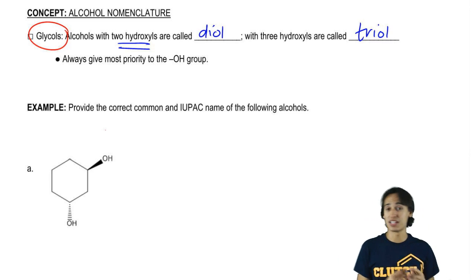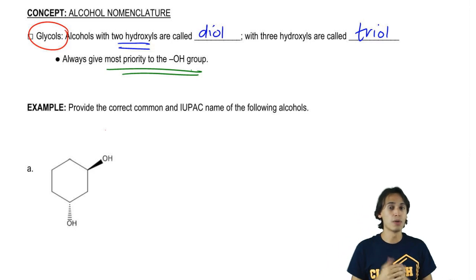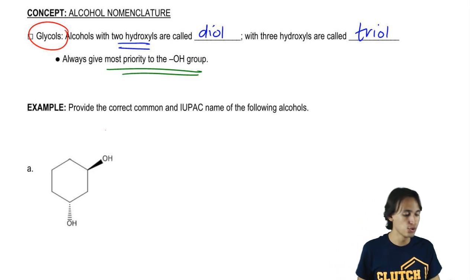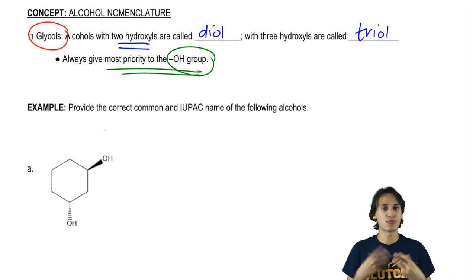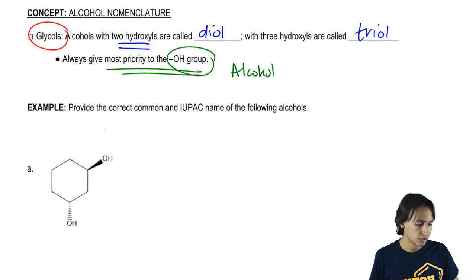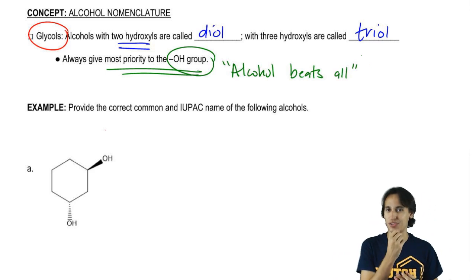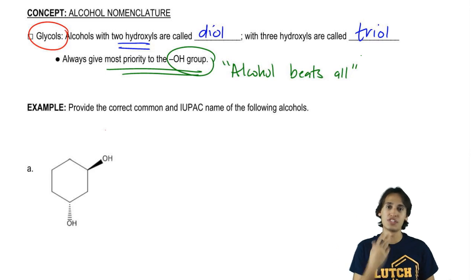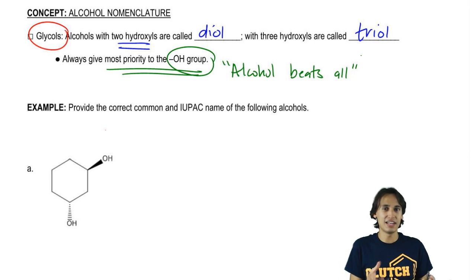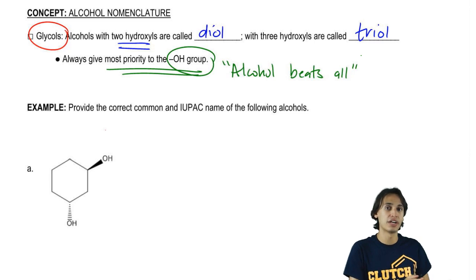Something unique about alcohol groups is that you always give the highest priority — in terms of how you number the chain or ring — to the OH group. There's actually a phrase we use in Orgo 1: alcohol beats all. That means the OH is going to beat all the other functional groups you're exposed to in Orgo 1. If you have a double bond, triple bond, alkyl halide, or anything else present, you give priority in numbering to the alcohol.